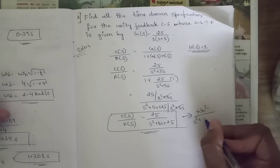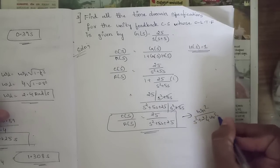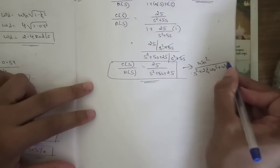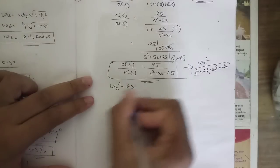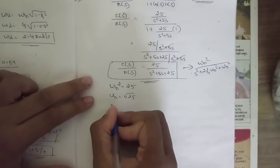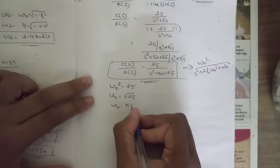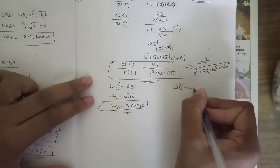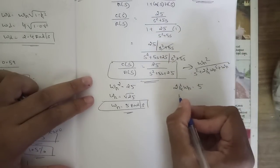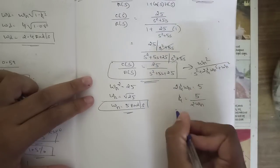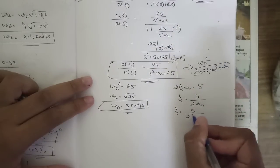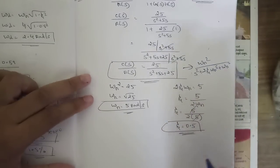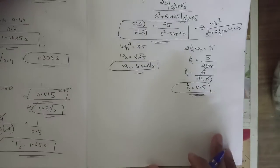Comparing C(s)/R(s) = 25/(s²+5s+25) with the standard form ωn²/(s²+2ζωn·s+ωn²): from the denominator, ωn² = 25, so ωn = 5 rad/s. The coefficient of s gives 2ζωn = 5, so ζ = 5/(2×5) = 0.5.